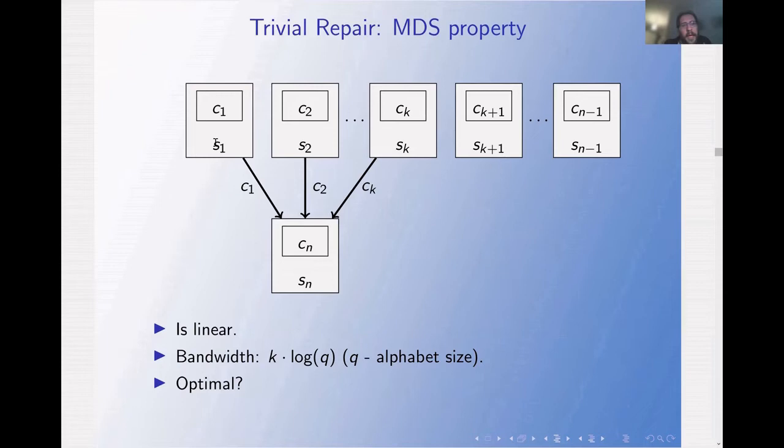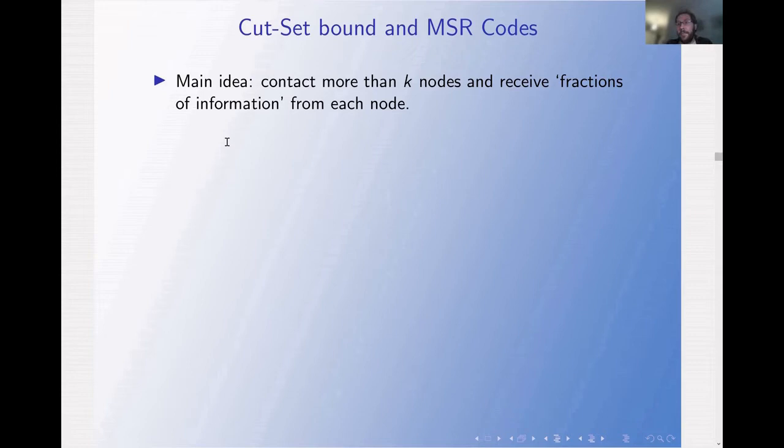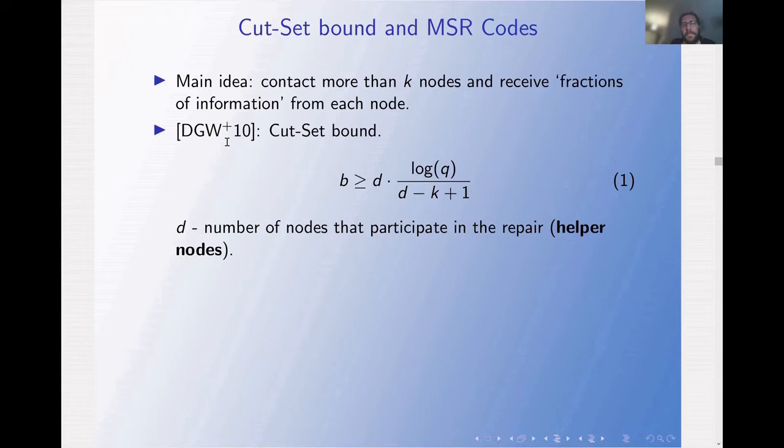Is the trivial repair optimal in terms of bandwidth? The answer is no. The main idea to achieve small bandwidth is to contact more than K nodes and receive a fraction of information from each node. For example, S1 might send only half the bits of C1, or compute a function of C1 and transmit only one bit. Contacting more than K nodes and receiving a fraction of information from each can reduce the bandwidth.